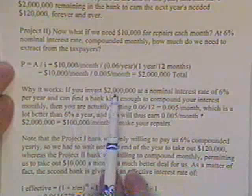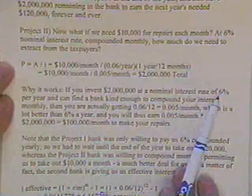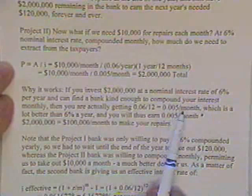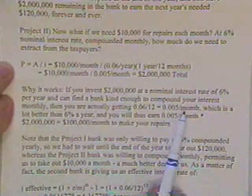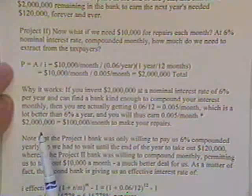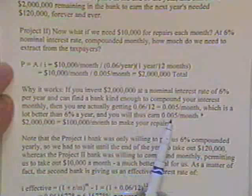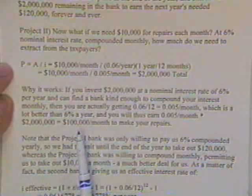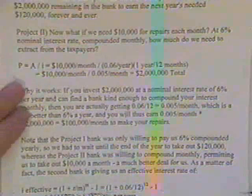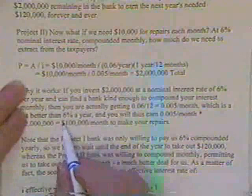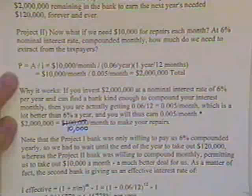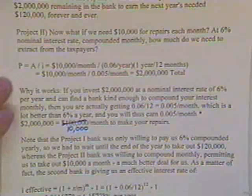Why will it work? Because if you invest $2,000,000 at a nominal rate of 6% a year, which is really 0.5% a month, since the bank was kind enough to compound monthly, then you multiply the $2,000,000 times the 0.5% a month, and it gives you, I've got $100,000 here, let's see about that. Okay, typo, typo, $10,000. Multiply $2,000,000 times 0.05, you get $10,000 a month to make your repairs.